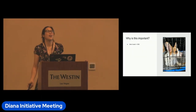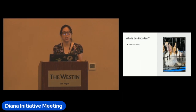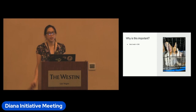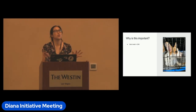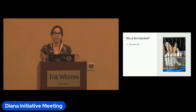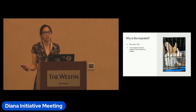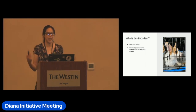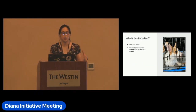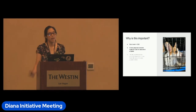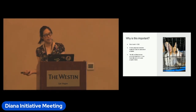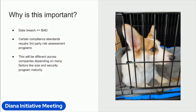Data breaches are bad. Data breaches can happen from internal security control misconfigurations, but they can also happen if your vendor does not keep your data safe. It really sucks to have a data breach from your internal organization, but it sucks even more if a vendor — because you're paying them money — creates a problem for you. Also, certain compliance standards require third-party risk management programs, so it's good to get the process started now. Risk management programs will look different across companies depending on factors like company size, maturity, and how mature your security program is.